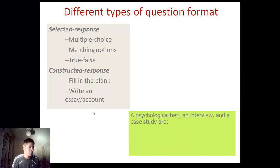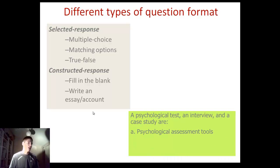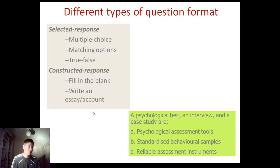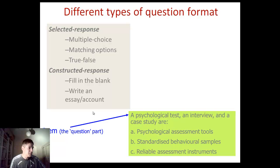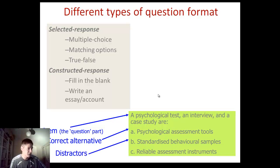Here's an example multiple choice question: 'Psychological test, interview, and case study are: A) Psychological assessment tools, B) Standardised behavioural samples, or C) Reliable assessment instruments.' You have the stem — the question part — the correct alternative, and the distractors, which are the incorrect answers. The clever part of writing multiple choice questions is making those distractors sufficiently plausible.